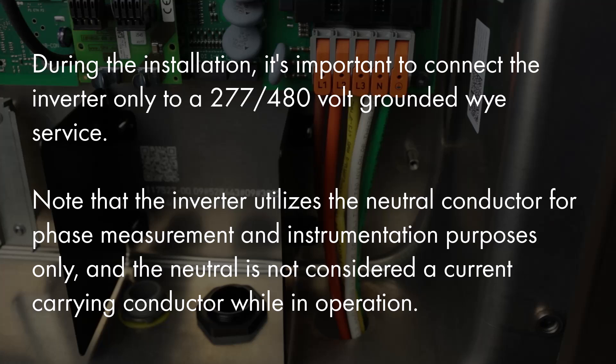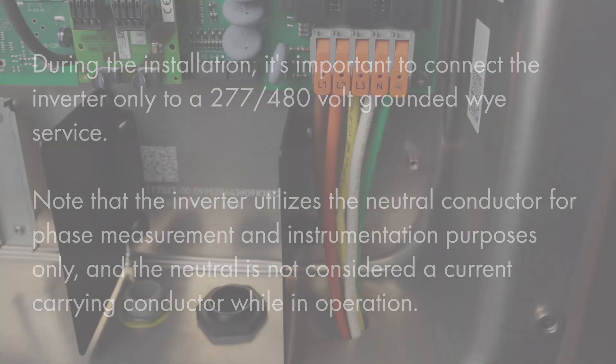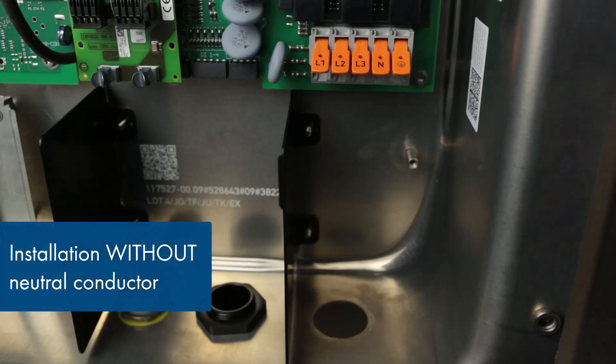During the installation, it's important to connect the inverter only to a 277, 480 volt grounded wide surface. Note that the inverter utilizes the neutral conductor for phase measurement and instrumentation purposes only, and the neutral is not considered a current carrying conductor while in operation. If you choose not to use a neutral conductor, you must install the neutral ground jumper.